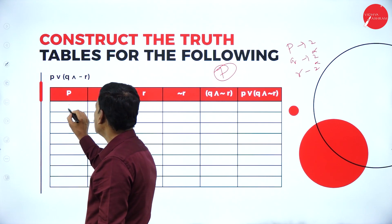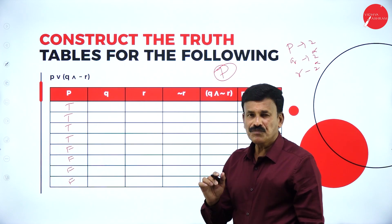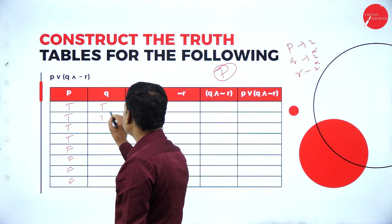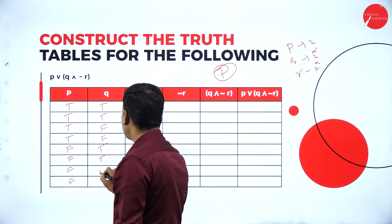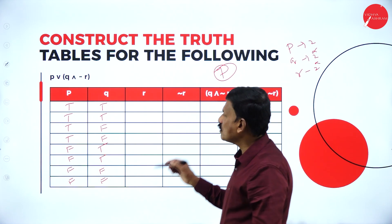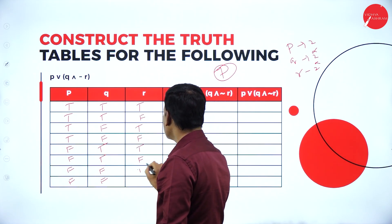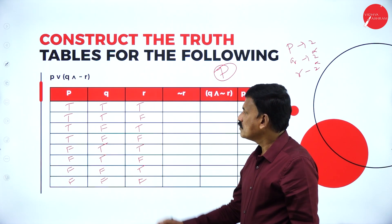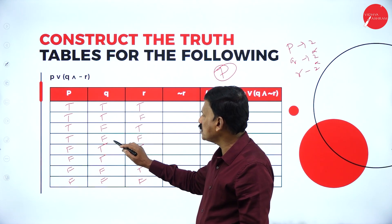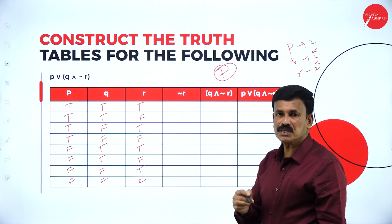For P: first 4 are true, remaining 4 are false. For Q: first 2 are true, true, then false, false, again true, true, false, false. For R: alternating true, false, true, false, true, false, true, false. Now write the negation of R: for T it is F, for F it is T — giving F, T, F, T, F, T, F, T.